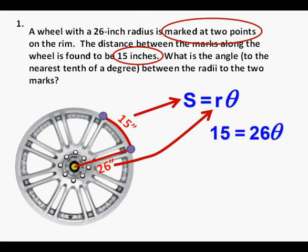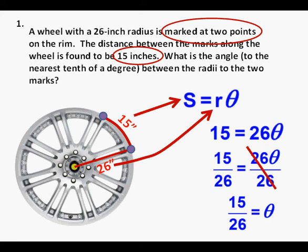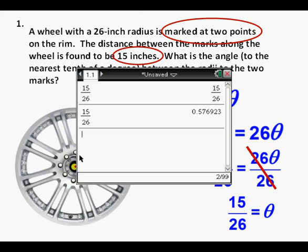So substituting in the formula we have 15 equals 26 theta. We solve for theta by dividing both sides by 26. So theta equals 15 over 26. We pull out our calculator and see that 15 divided by 26 is 0.576923, which rounds to 0.6. Does this make sense that our angle is 0.6 degrees? No it doesn't. This number is in radians.